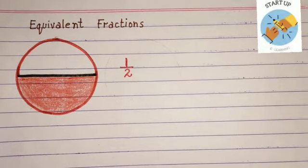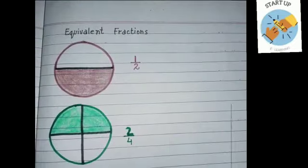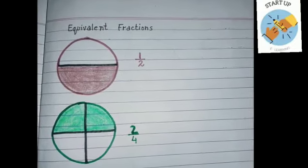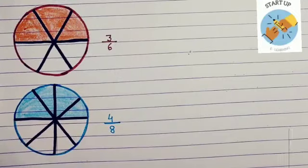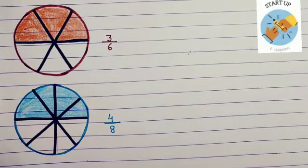Let's understand equivalent fractions through these figures. This red circle represents half. This green circle represents two fourths. The third circle, which is of brown color, represents three sixths. And the blue color circle represents four eighths.